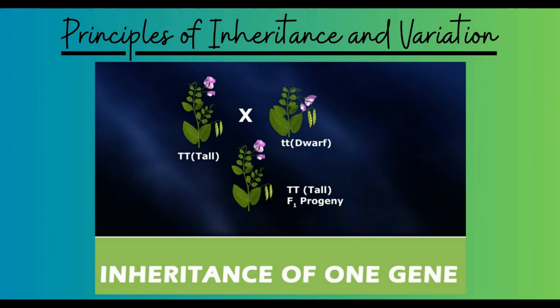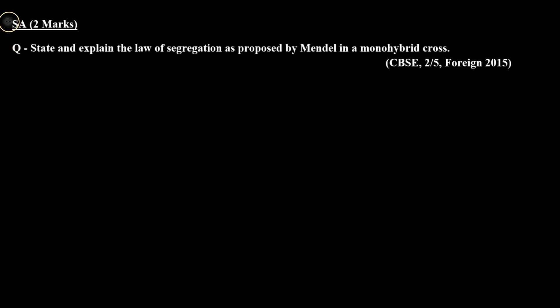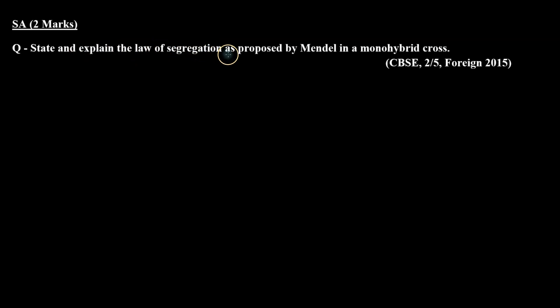Hello everyone. We are solving previous year questions of the chapter Principles of Inheritance and Variation, and the topic inheritance of one gene. In today's session we are going to solve a short answer type question of two marks which was asked in the CBSE board exam 2015. The question is: state and explain the law of segregation as proposed by Mendel in a monohybrid cross.